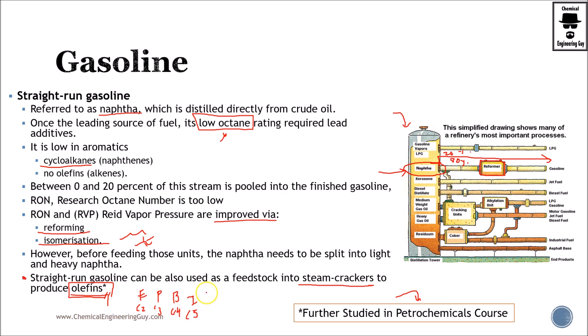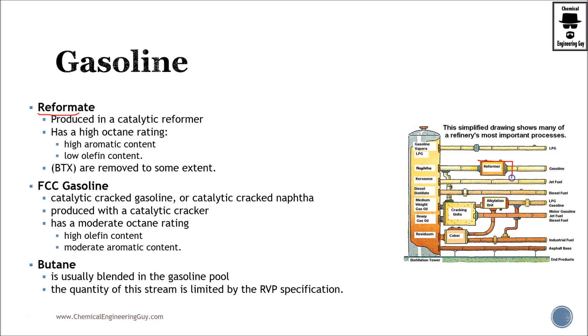In petrochemicals, the goal is to create chemicals, not to burn them — about 5% of crude oil is converted into chemicals and 95% is burned or used as asphalt. Reformate is the product coming out of the catalytic reformer. It has a high octane rating because we are producing more aromatics and decreasing the paraffin content.